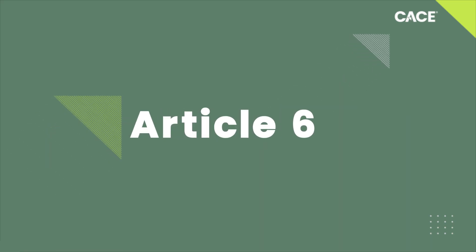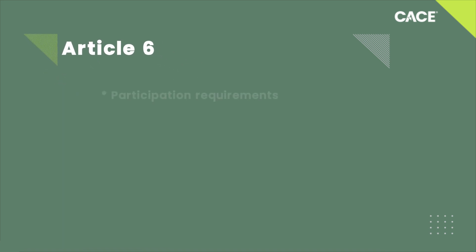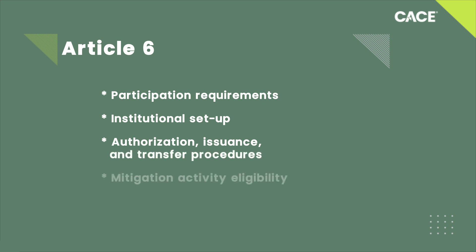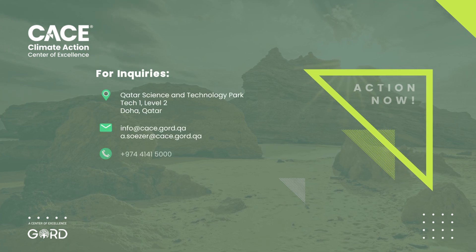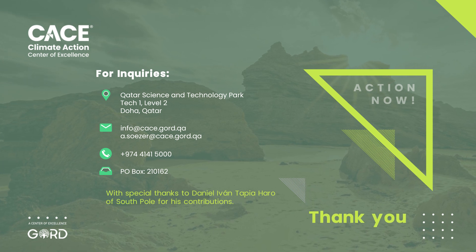In the coming modules, we will delve deeper into specific aspects of Article 6, providing detailed guidance on participation requirements, institutional setup, authorization, issuance and transfer procedures, and mitigation activity eligibility. By the end of this training series, you'll have the knowledge and tools to actively participate in and leverage Article 6 mechanisms, driving both national and global progress towards our shared climate goals. Stay tuned for the next module, and thank you for your commitment to climate action.